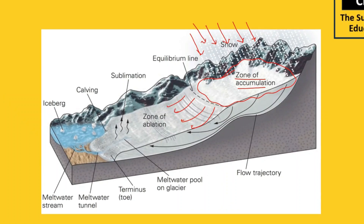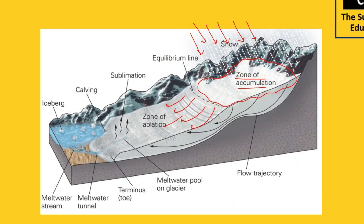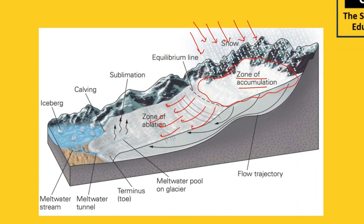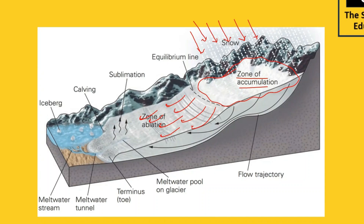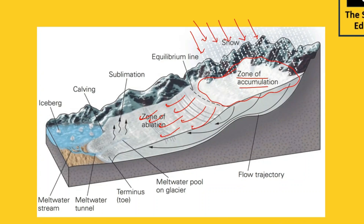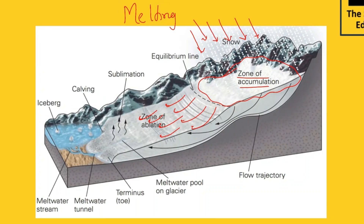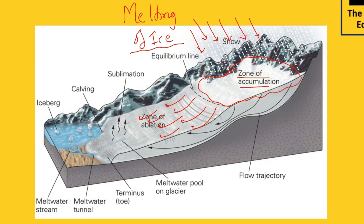Ablation means the region of the ice sheet from where it starts melting. The major important part: ablation is related to the melting of ice sheets. So here we can say why it is melting and how it is melting.